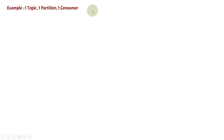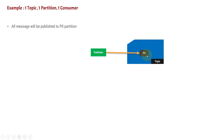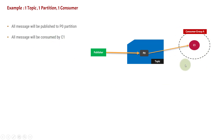Let's take an example where there is a single topic with one partition and only one consumer. In this case, all messages will be published to the P0 partition. The publisher sends all messages to P0 because there is no other partition. All the messages will then be consumed by consumer instance C1, which is present inside consumer group A.